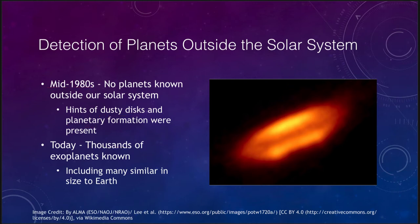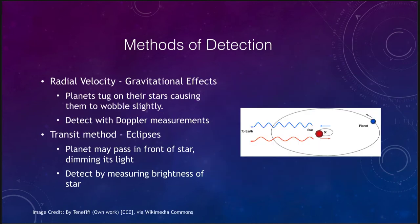Now, how can we detect these planets? And there are several methods that are used, including gravitational effects as one example, and what we call the transit method or eclipses that occur. Let's first look at the radial velocity effects.